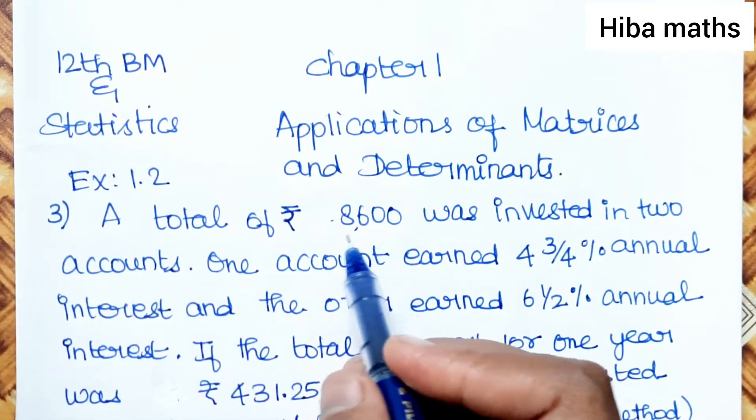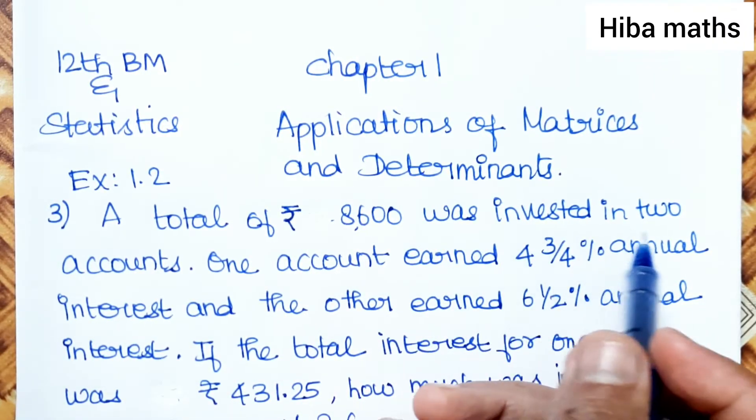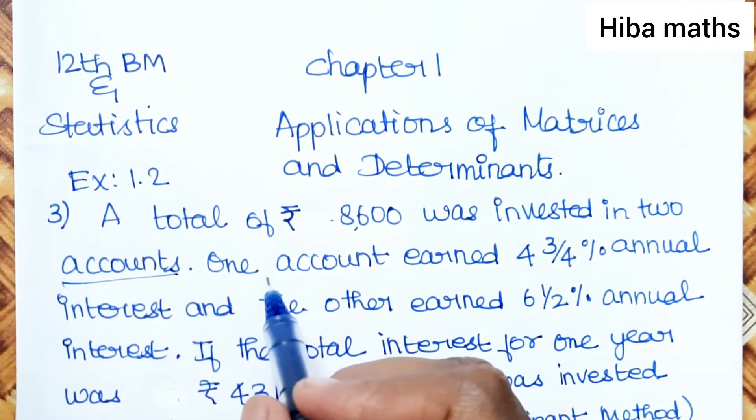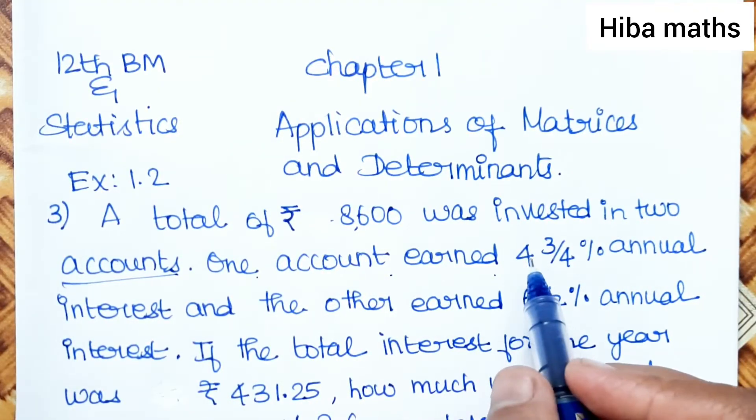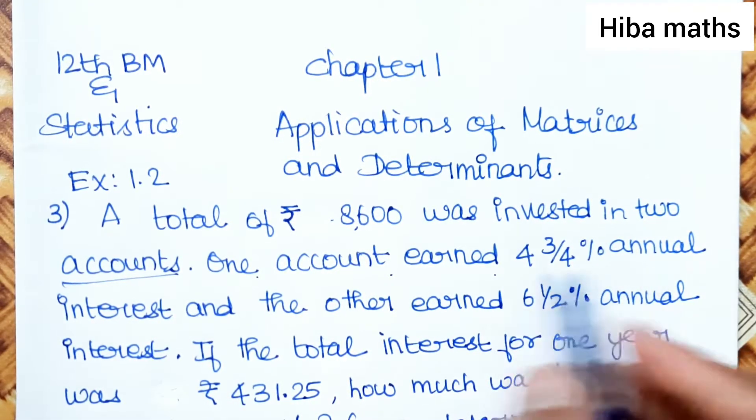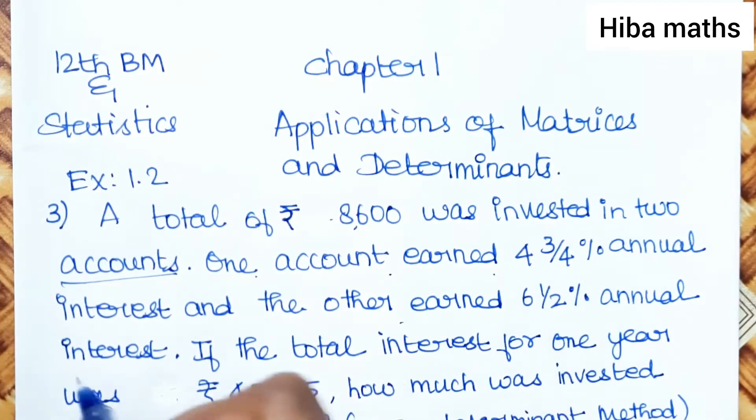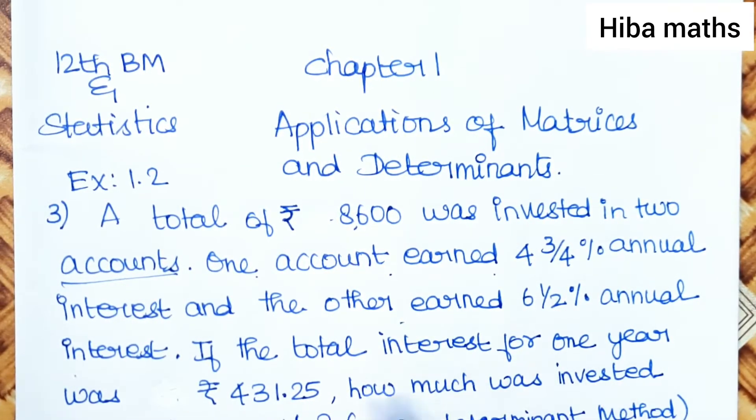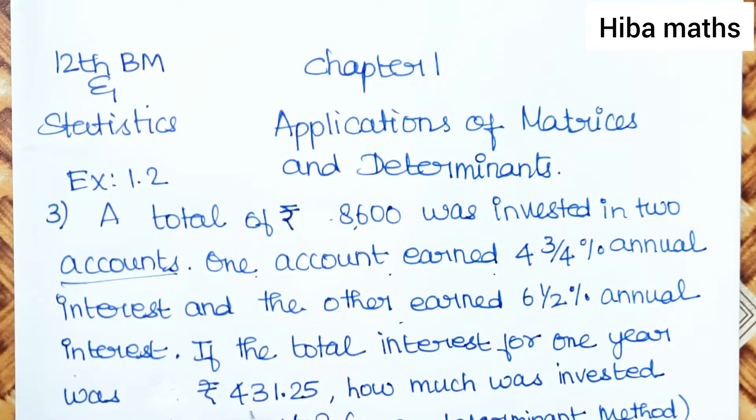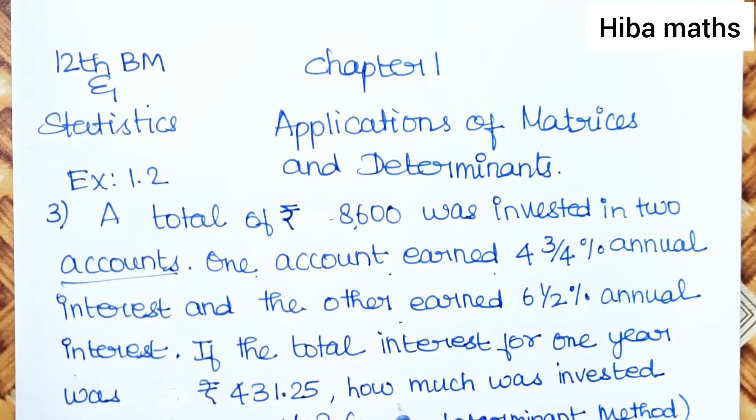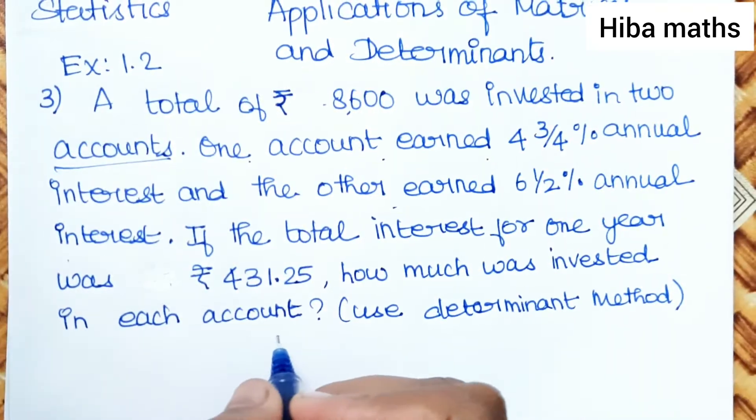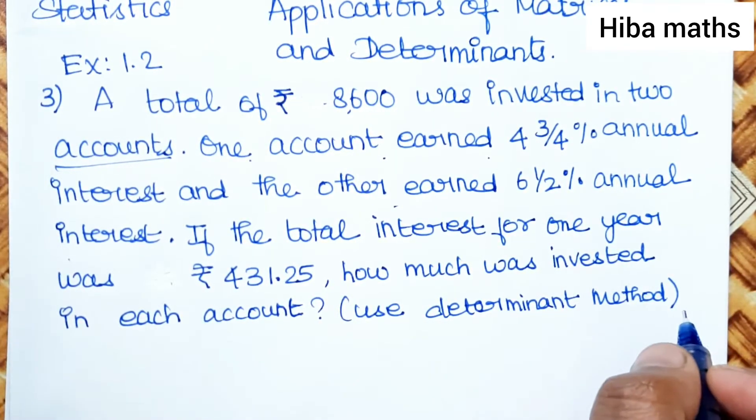A total of Rs. 8,600 was invested in two accounts. One account earned 4 3/4% annual interest and the other earned 6 1/2% annual interest. If the total interest for one year was Rs. 431.25, how much was invested in each account? Use determinant method.